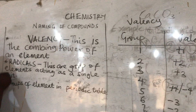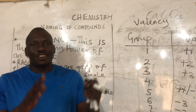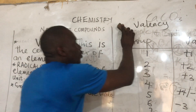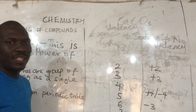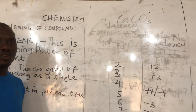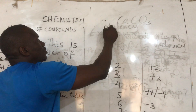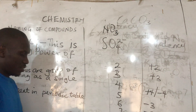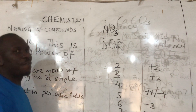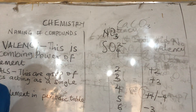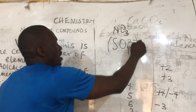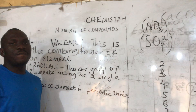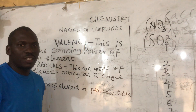Now let's go to the third part: radicals. Radicals are groups of elements acting as single units. You have come across many radicals but didn't know it, and this has been a problem for science students. Examples include NO₃⁻ and SO₄²⁻. These radicals have single valencies when naming a chemical compound.